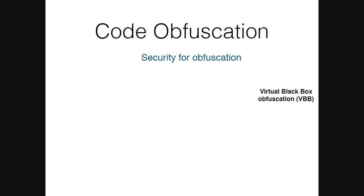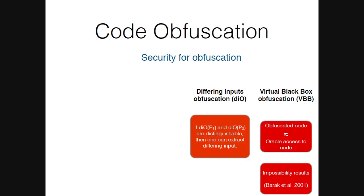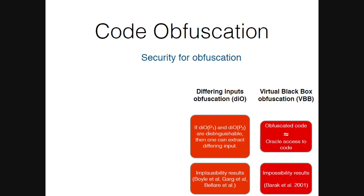There are various security notions for obfuscation. The strongest is virtual black box obfuscation, which says that giving an adversary obfuscated code is the same as giving oracle access — the adversary only learns input-output behavior. Unfortunately, this is too good to be true, and there are impossibility results by Barak et al. A weaker notion is differing-input obfuscation: if obfuscations of two programs p1 and p2 are distinguishable, then there exists an extractor that can extract a differing input. Even for this, we have implausibility results by Boyle et al., Garg et al., and in recent work by Bitansky et al.